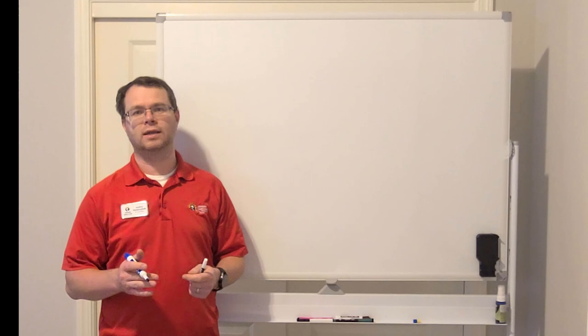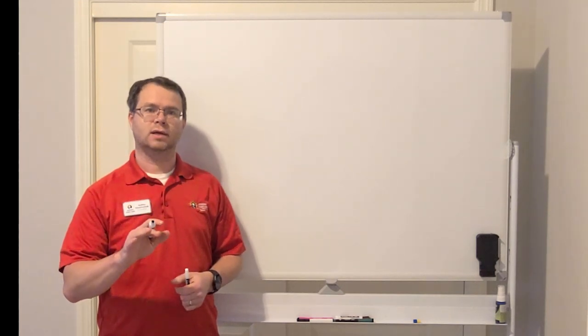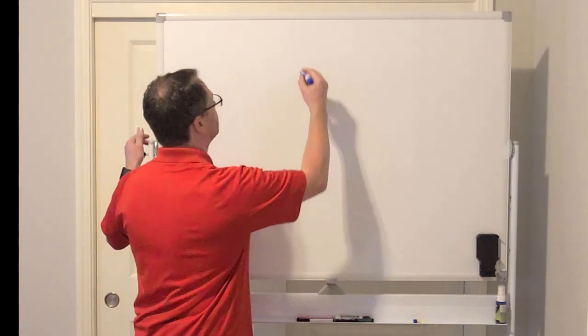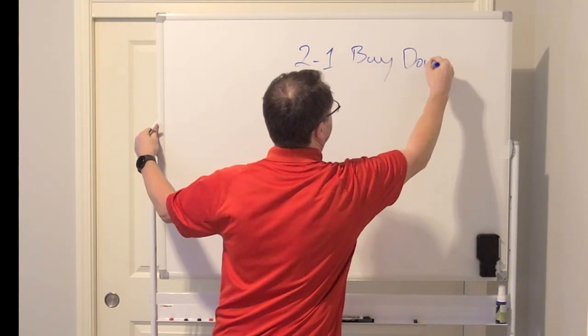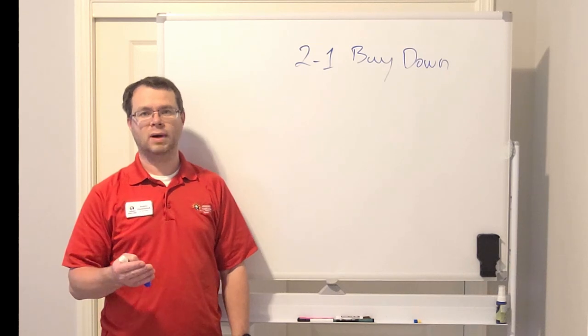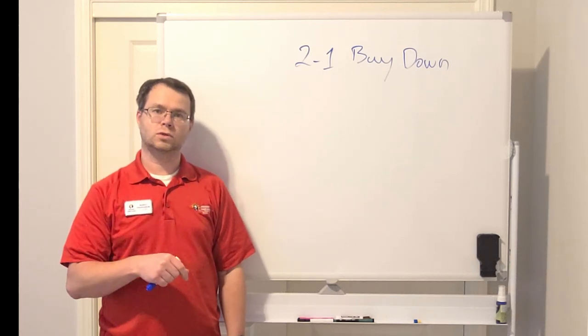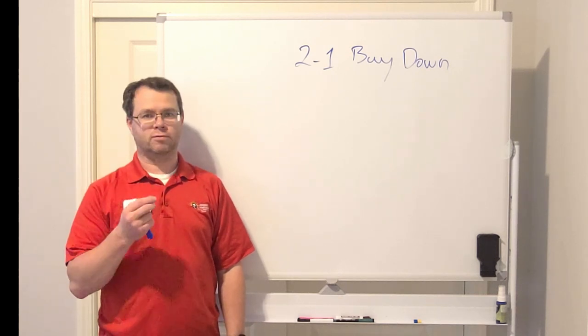So how can you get a 4% interest rate? By utilizing a program called 2-1 Buy Down. That's a 2-1 Buy Down. What is it?